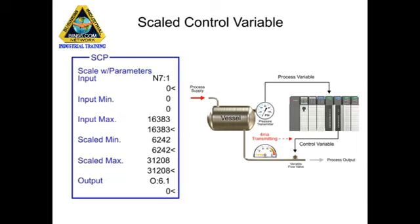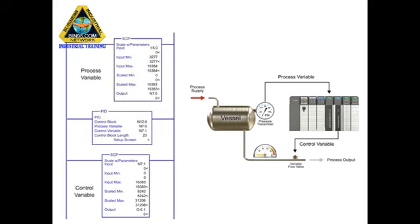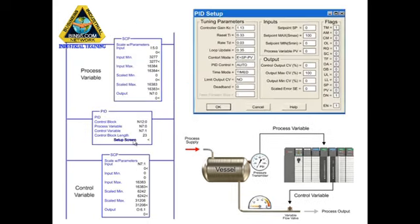The analog signal is then sent to the flow valve where the operating range is adjusted between 0 and 100%. With the data scaled using the SCP instruction, the process of controlling the pressure of the vessel to 50 psi continues by entering the setpoint of 50 in the PID setup menu.